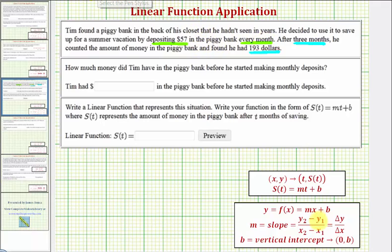A linear function in slope-intercept form would be in the form Y equals MX plus B, where M is the slope or constant rate of change and B is the vertical intercept, or the point (0, B), where B is the function value when the input is zero.